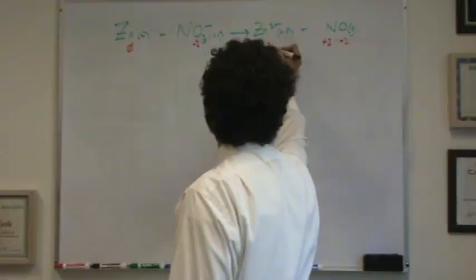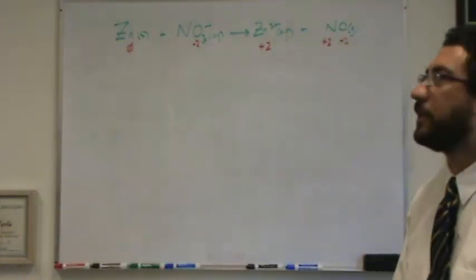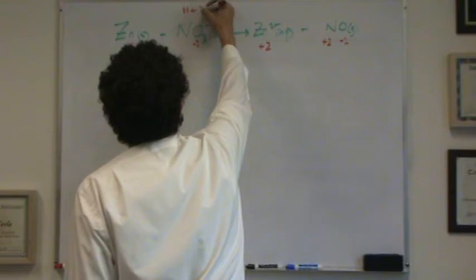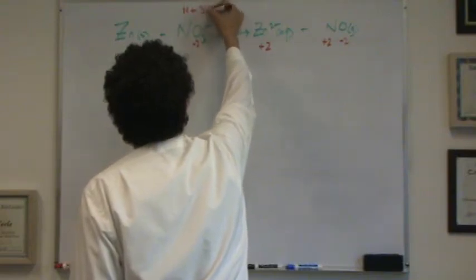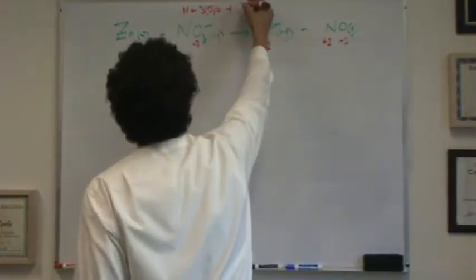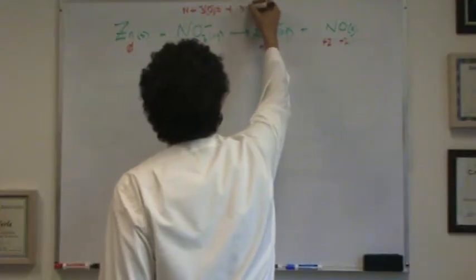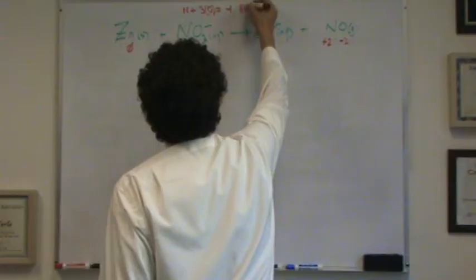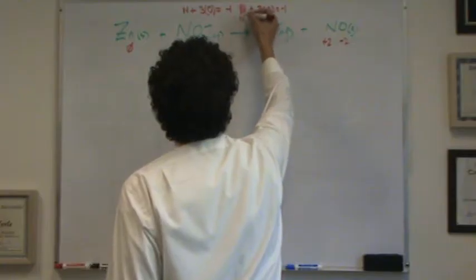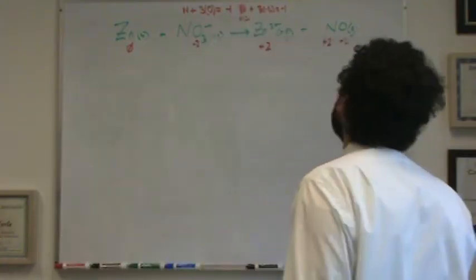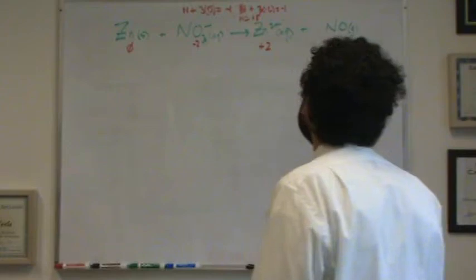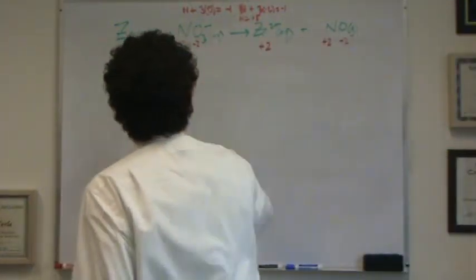For zinc, they already give us the charge here. It's zinc two plus, it's plus two. The hard one is going to be this nitrogen right here. You're going to do this on scratch. Nitrogen plus three oxygens equals the overall charge of minus one. So you've got nitrogen, you've got three oxygens, overall charge of minus one. Set up a little algebra equation. Nitrogen plus three times minus two equals minus one. Or nitrogen equals what charge? That's going to be plus five. Five minus six is minus one. So the nitrogen is plus five.